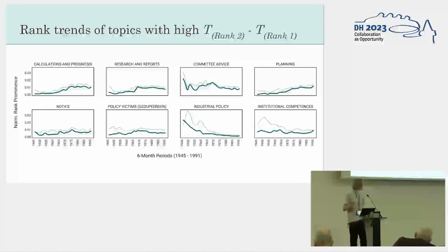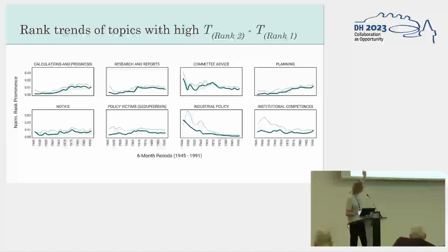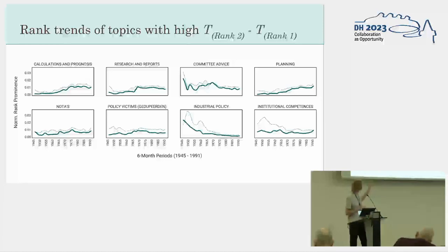Then if you look at the other end of the tail, you can see there are more structural topics. For example, 'calculations and prognosis' is a more abstract topic where the rank two line — that's the small dotted line — is actually higher than the rank one line. So this topic is more often below the surface than ranked first. You can see these kinds of structural topics and some economic logics here: industrial policy, institutional competencies, always about how the state is functioning.